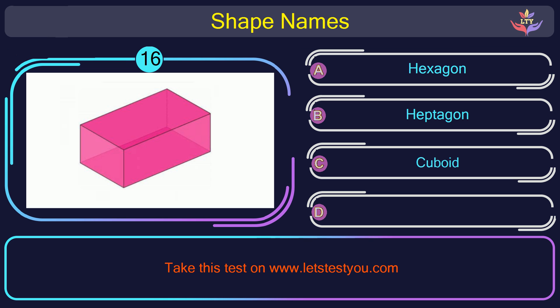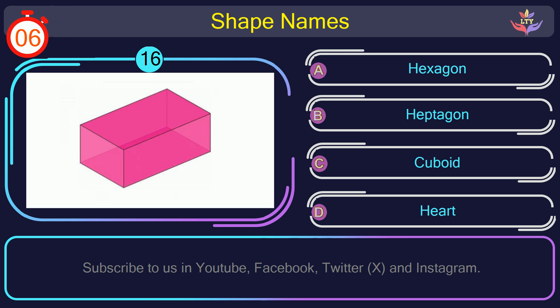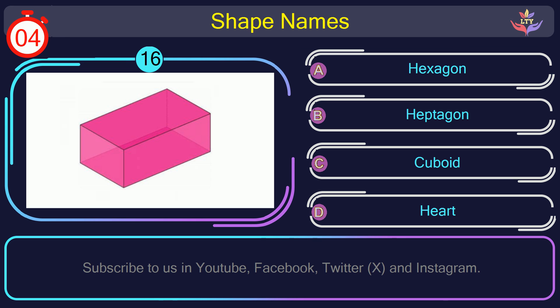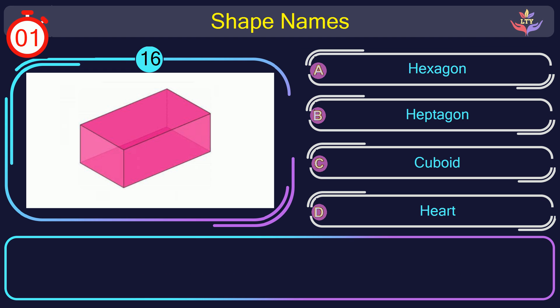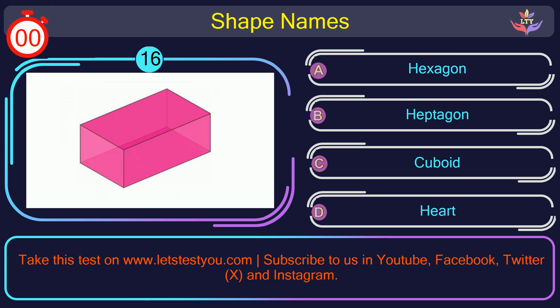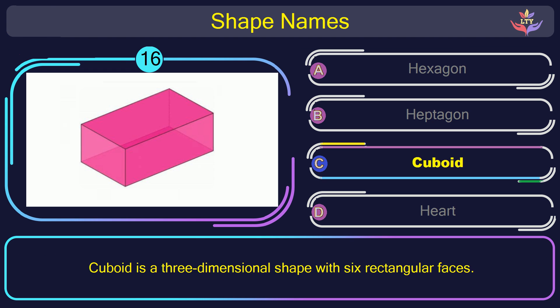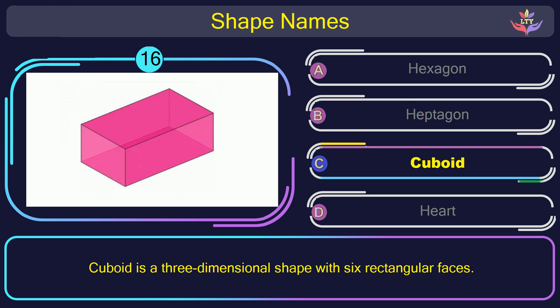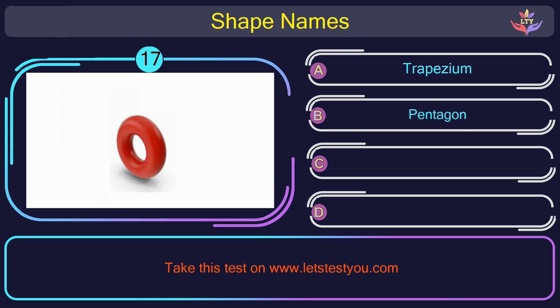Question number 16. Could you figure out the name of the shape in this picture? The correct answer is option C. Cuboid. Cuboid is a three-dimensional shape with six rectangular faces.